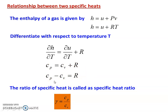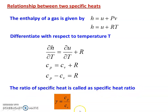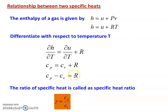This is very important for problem solving. The ratio of specific heat is called the specific heat ratio, which is gamma. Gamma equal to Cp by Cv. So R equal to Cp minus Cv and gamma equal to Cp by Cv — these two are important.